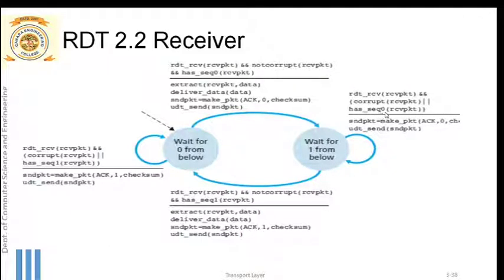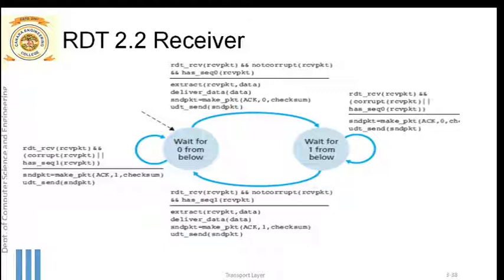To summarize: if a packet with the wrong sequence number is received, a wrong acknowledgement — using the other sequence number — is sent, which acts as a negative acknowledgement. This is how RDT 2.2 receiver conditions work — same as RDT 2.1 but with NAK ruled out. The progression was: RDT 1.0 (perfect channel) → RDT 2.0 (error detection only) → RDT 2.1 (added sequence numbers) → RDT 2.2 (NAK-free protocol).